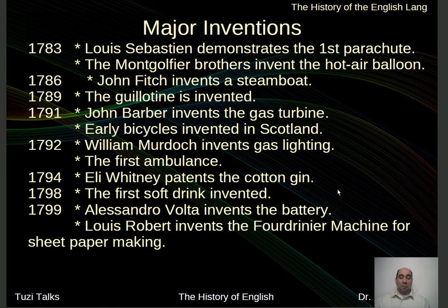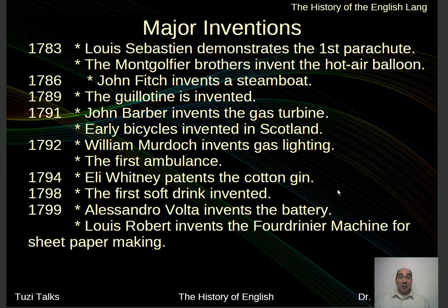In 1792, Murdoch invents gas lighting — up until then lighting was manual; now they can run pipes all over and have gas lighting on the streets, a big change. Also in 1792, the first ambulance is developed, on horse and wagon no doubt. In 1794, Eli Whitney patents his cotton gin. In 1798, the first soft drink is invented — it just blows my mind that we had soft drinks in the early 1800s, at the very founding of our country. In 1799, Alessandro Volta invents the battery, and Lewis invents the foundry machine for sheet paper making — revolutionary, changing the way paper is made and making it much faster.